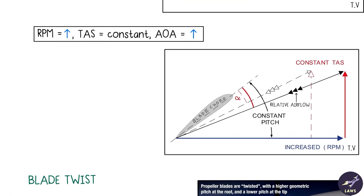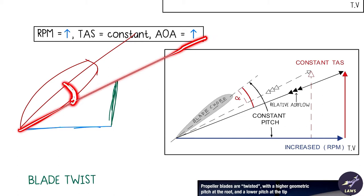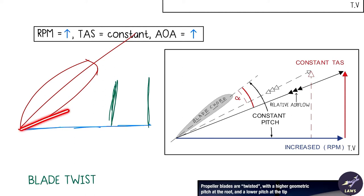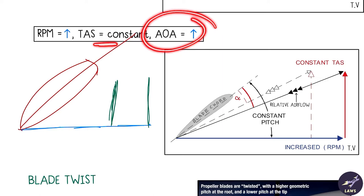Now keeping TAS constant and increasing RPM: if RPM increases further while TAS stays constant, the new relative airflow changes such that the angle of attack increases. So if you increase the RPM while keeping TAS constant, your angle of attack will increase.